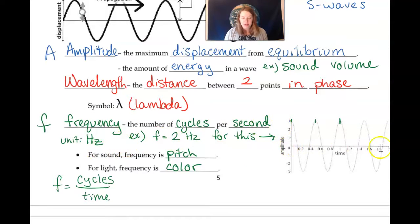So if we look at this graph that has time on the x-axis, the number of cycles in one second is, so we can go, we go down and we go up, that's one cycle. We go down, we go up, that's two cycles. So two cycles in one second gives us a frequency of two hertz.